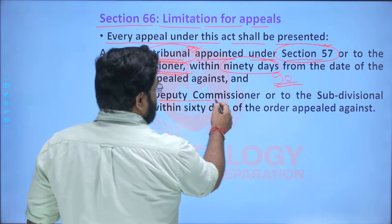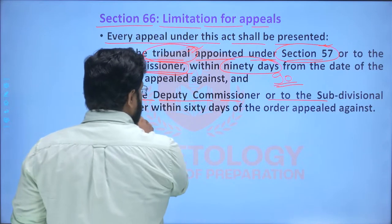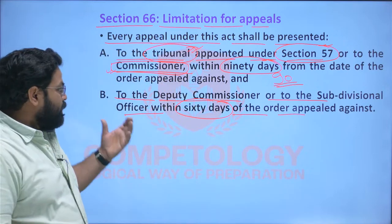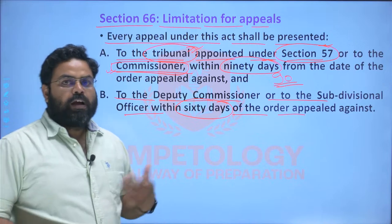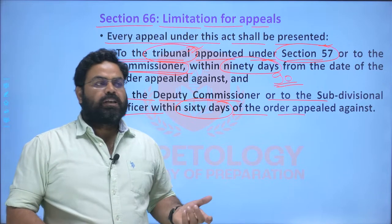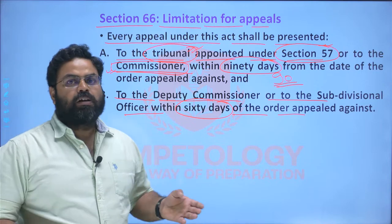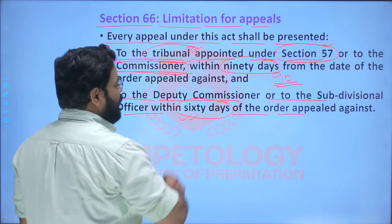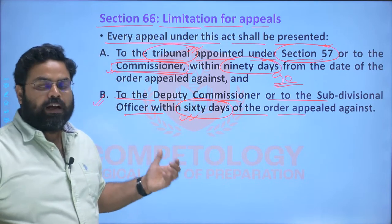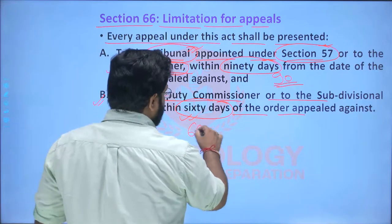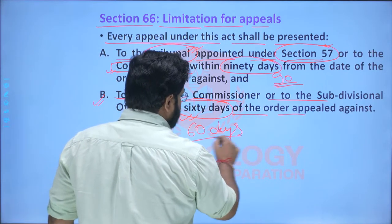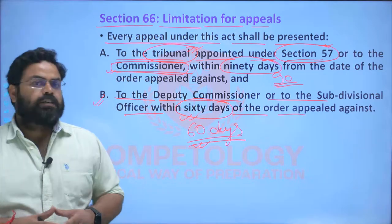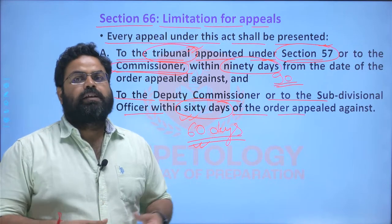In cases where an appeal is to be filed to the Deputy Commissioner or the Sub-Divisional Officer against the order of their subordinate officer, the application must be filed within 60 days. So the time limit is already given for such kinds of appeals in which judicial or adjudication work is going on against any issue or dispute.